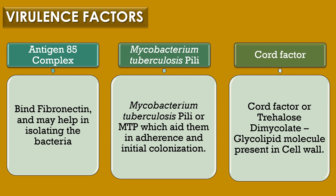Mycobacterium tuberculosis has three virulence factors: antigen 85 complex, Mycobacterium tuberculosis pili, and cord factor. The first virulence factor — Mycobacterium tuberculosis can secrete proteins known as the antigen 85 complex, which binds with fibronectin and may help in isolating the bacteria. For the second factor, Mycobacterium tuberculosis does not produce any toxins, but produces pili known as Mycobacterium tuberculosis pili or MTP, which aids in adherence and initial colonization in the host cells.